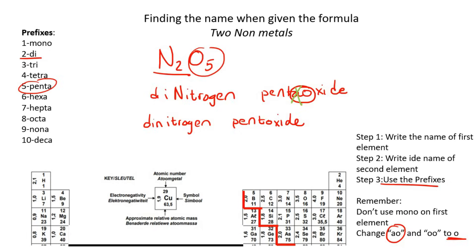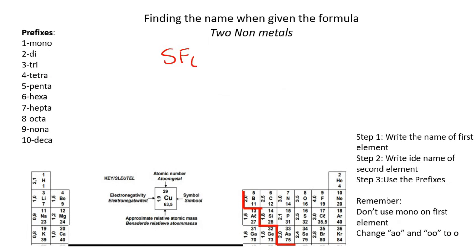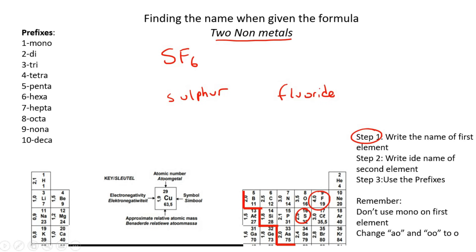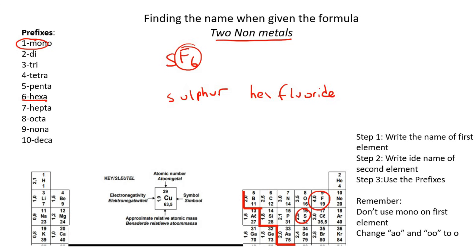Let's do one more example: SF₆. Sulfur is a non-metal and fluorine is also a non-metal, so this is definitely two non-metals. Step one: write down the name of the first element — sulfur. Step two: write the IDE name of the second element — fluoride. For the prefixes: there is only one sulfur, but we don't put mono on the first element. For fluoride, there is a 6, so that's hexa — hexafluoride. So this is sulfur hexafluoride.